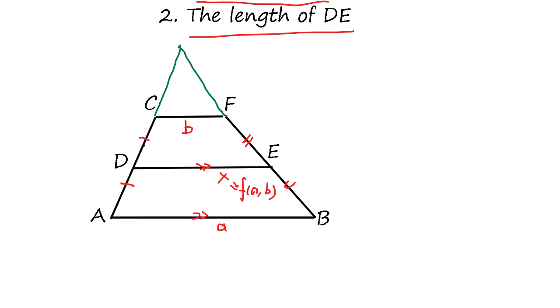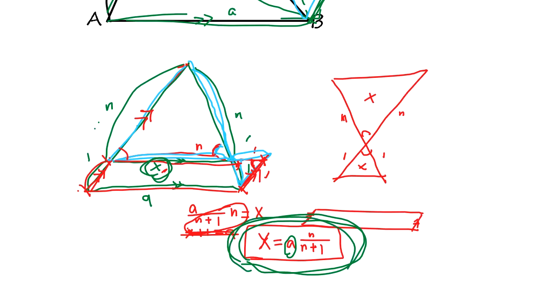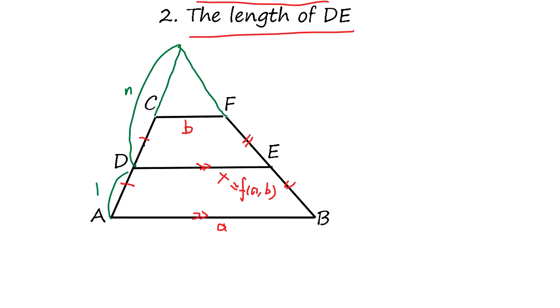So if we know this is n to one, then we know the answer already in the previous video: x is a times n over n plus one. Right? So x equals a n over n plus one. We know this answer already. The question is how do you get n.